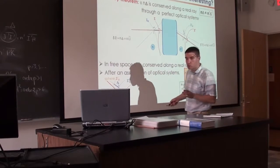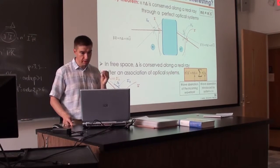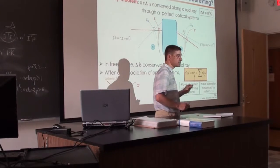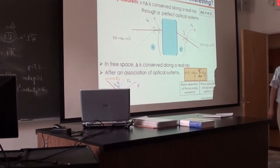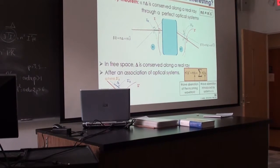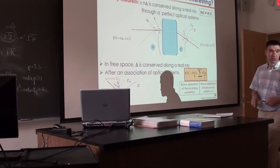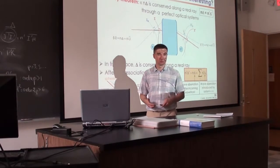This is why it's interesting: because it tells you that aberrations are additive if you consider the right quantity — the optical path difference. Aberrations are not additive if you consider the transverse aberrations. If you take system one, system two, system three, characterize them on the bench, and put them all together, it's more complicated than just summing the spots. But what is additive is the optical path difference.